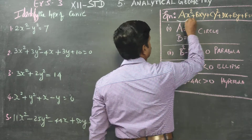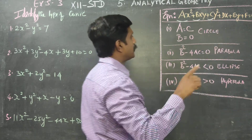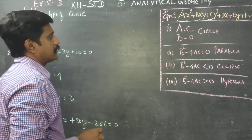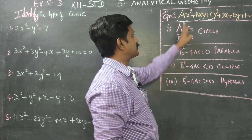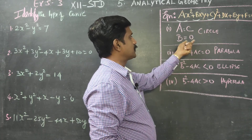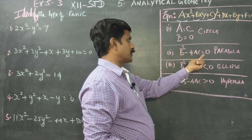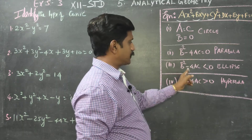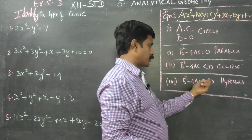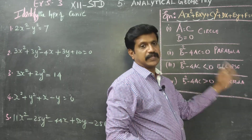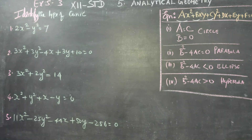Using a, b, c, we will find and identify the type of conic. The four conditions are: if a equals c and b equals 0, it is a circle; if b squared minus 4ac equals 0, it is a parabola; if b squared minus 4ac is less than 0, it is an ellipse; and if b squared minus 4ac is greater than 0, it is a hyperbola.